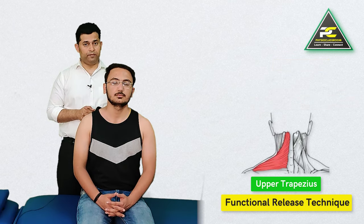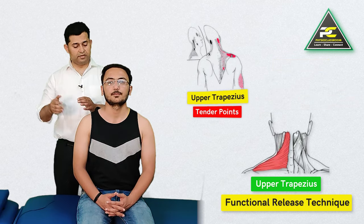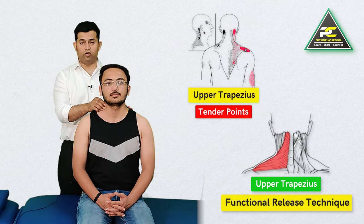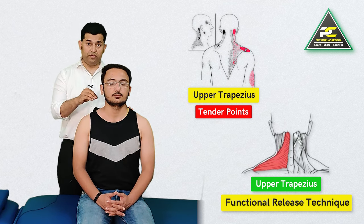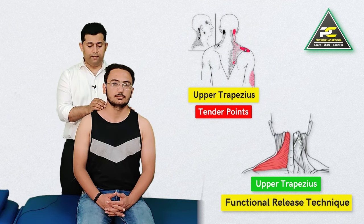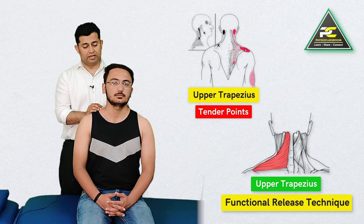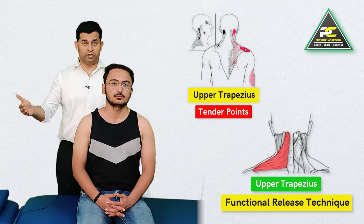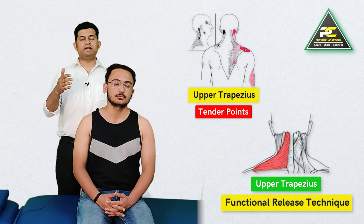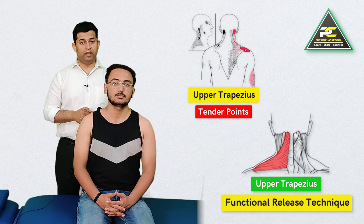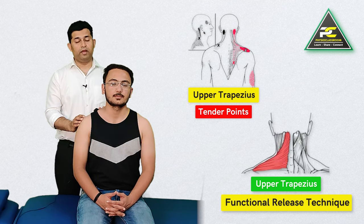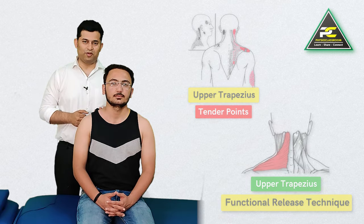This technique is going to help the physiotherapist to quickly assess and treat the presence of trigger points and taut bands within this particular muscle, which can cause improper functioning of the upper trapezius and produce a variety of symptoms as previously described. So let's get started with the functional release treatment for the upper trapezius.